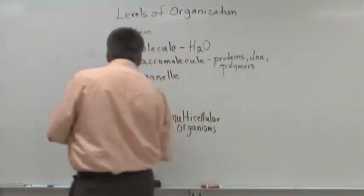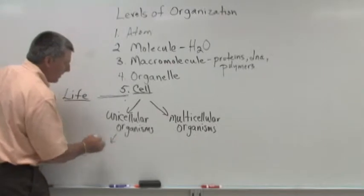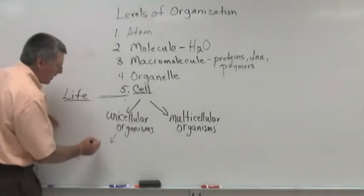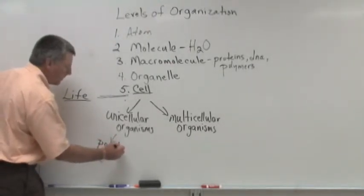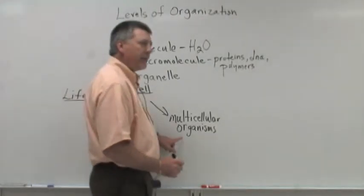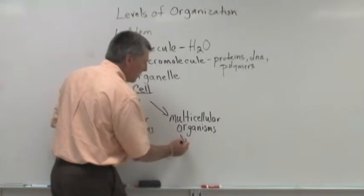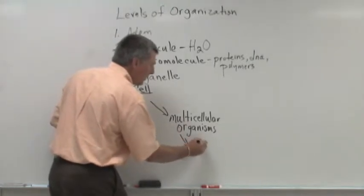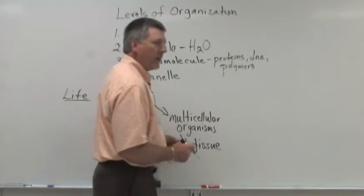If we're dealing with unicellular organisms, the next level of organization is the population level. If we're dealing with multicellular organisms, the next level of organization is the tissue level.